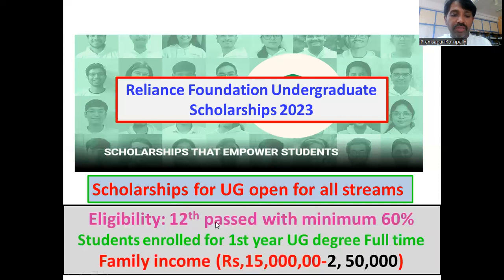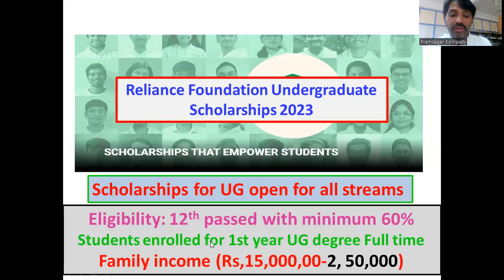Let us see the eligibility criteria. You must have passed the 12th class exam with a minimum of 60% — so 60% is the cutoff. Whoever passed the 12th class exam and is enrolled for a UG degree in the first year is eligible to apply.